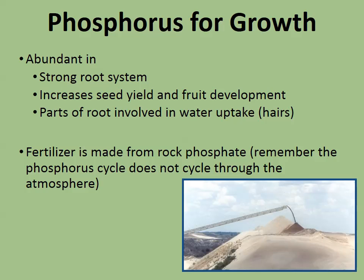Phosphorus does not have an atmospheric component — it does not cycle through the atmosphere. It's mainly found in rocks and in different types of bird droppings, so most fertilizer is made from phosphate rocks. We need phosphorus for a strong root system, increased seed and fruit development, and for the root hairs involved in water uptake.